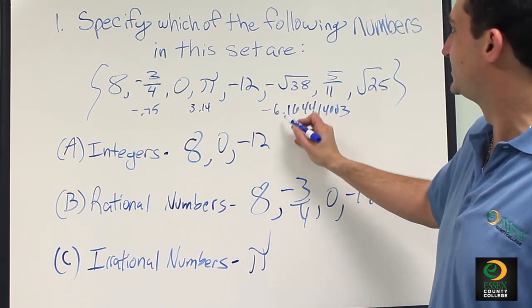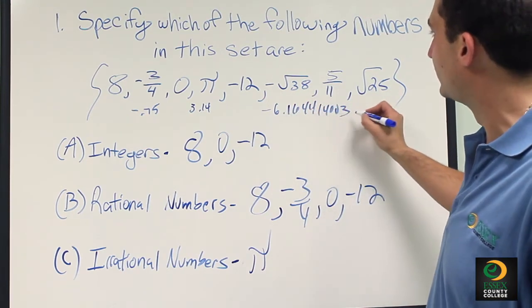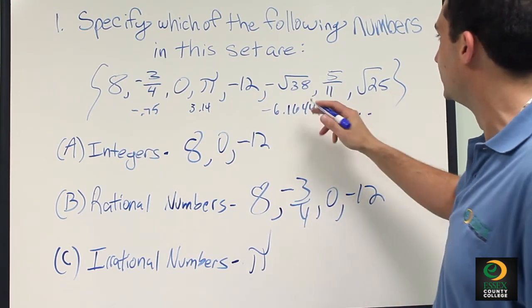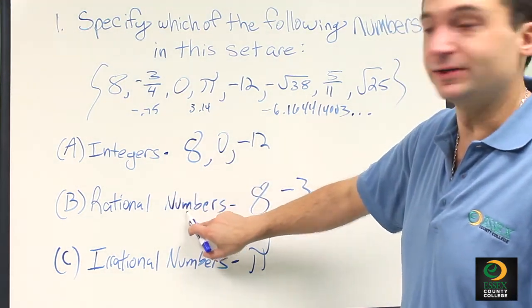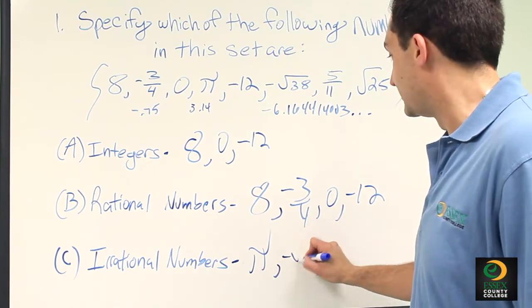The square root of negative 38, if you were to do the math, goes on to negative 6.164414003, but it keeps on going on infinitely, so it doesn't make it an integer or a rational number, it makes it an irrational number.